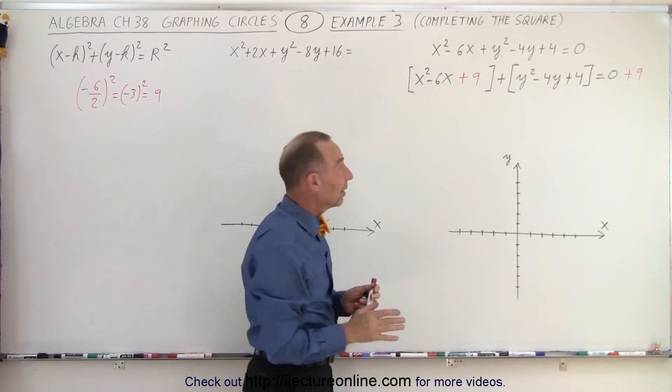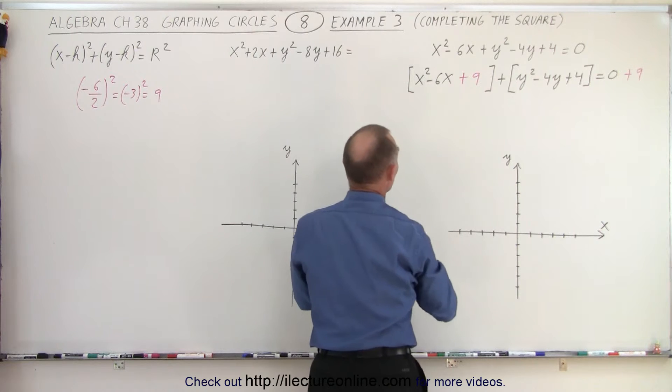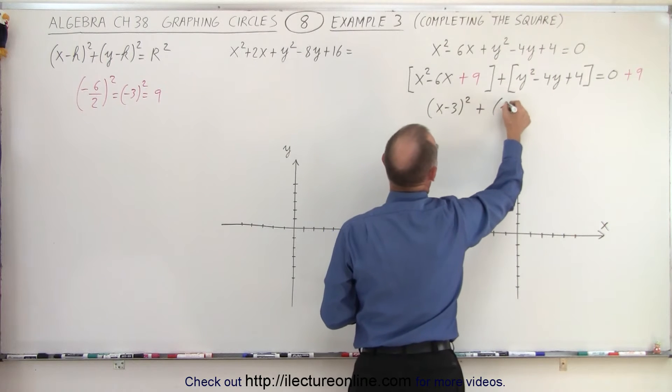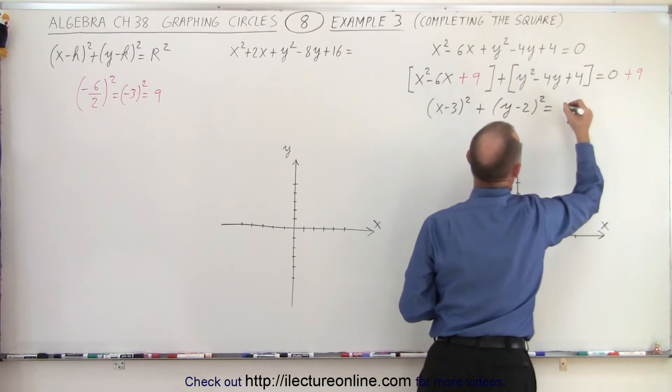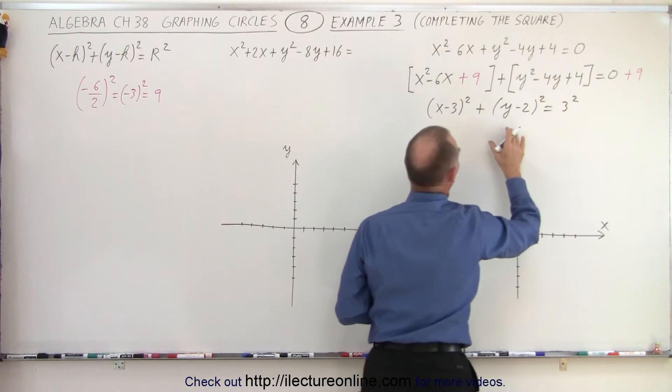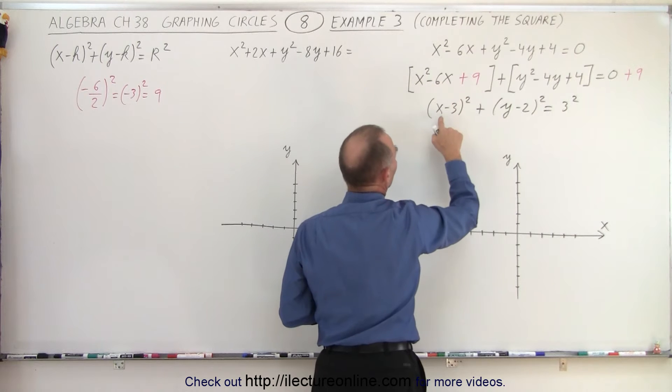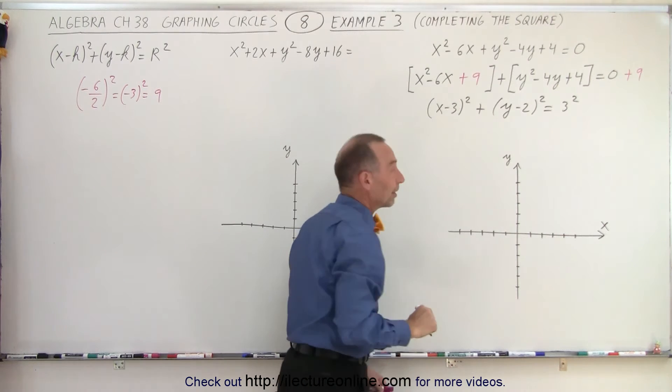Now, we can go ahead and write this in this particular format, the general format of a circle. So, this can be written as x minus 3 quantity squared plus y minus 2 quantity squared is equal to, and 9 can be written as 3 squared. Notice, again, if you work this out, you square this, you get 9. 2 times the product of this 2 is minus 6x. So, you can see that this is indeed the same as what we have over here.